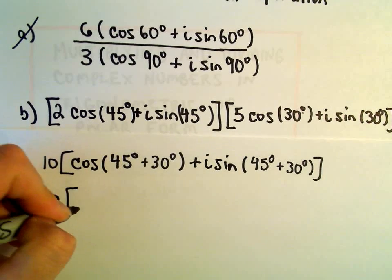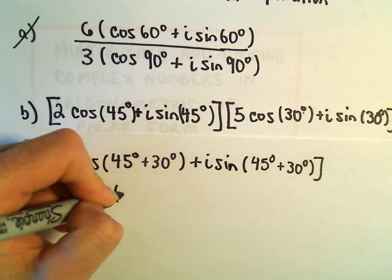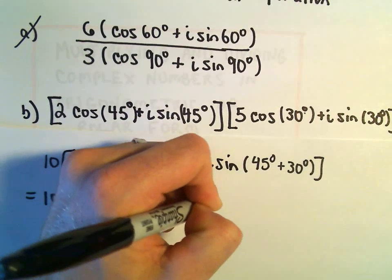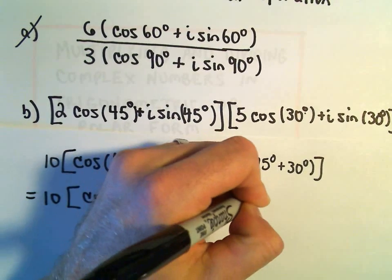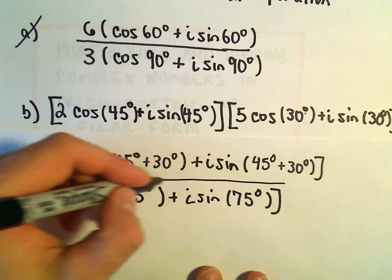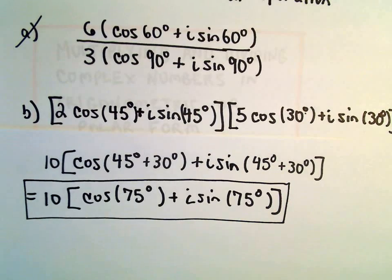And in this case, we'll just be left with 10 times cosine of 75 degrees plus i times sine of 75 degrees, and again, in this case, we'll just leave them in our polar form. Again, we've now got our solution here, so not a lot to do.